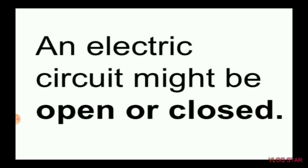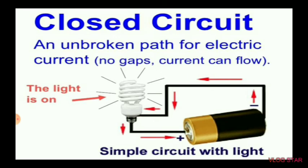An electric circuit can be either open or closed. In a closed circuit, there is an unbroken path for electric current with no gaps, so current can flow. All components — the wires, bulb, and battery — are connected, so the light will be on. That's called a closed circuit.